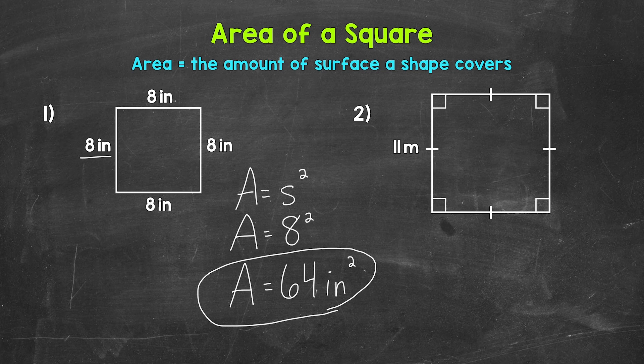Let's move on to number 2 where we have a square with sides that are 11 meters. And you'll notice that we only have one side labeled. That's because this is a square and we know all of the sides are going to be the same. They're all going to be 11 meters. The tick marks on each side of this square show us that they are all the same. We have one tick mark on each side.